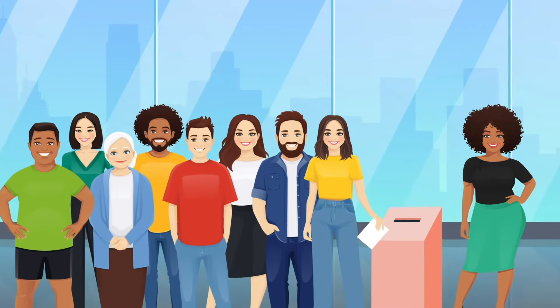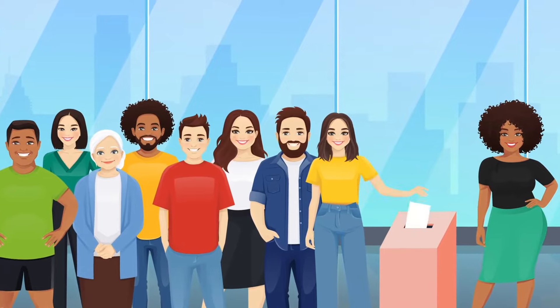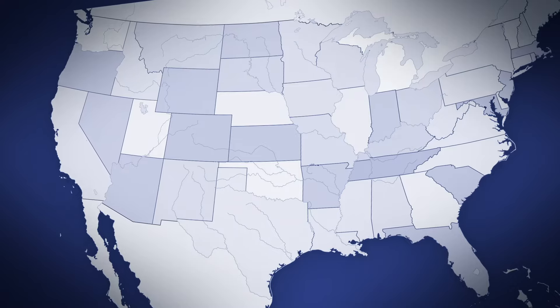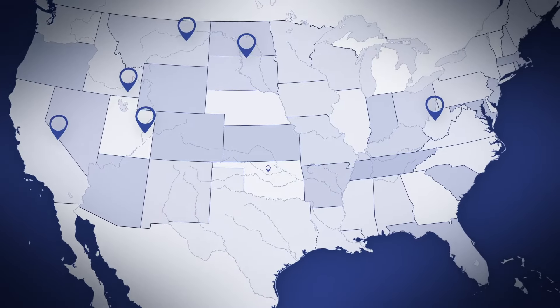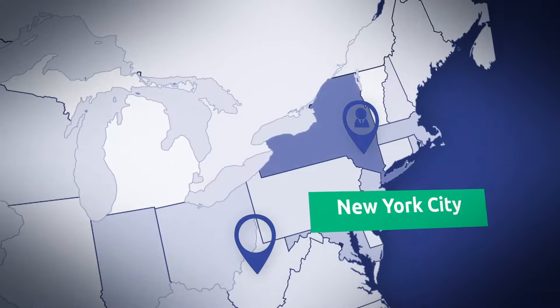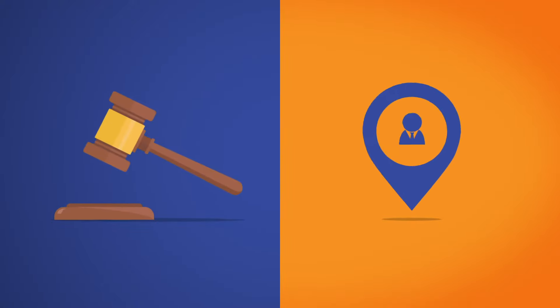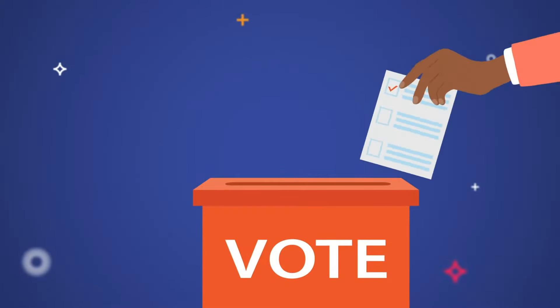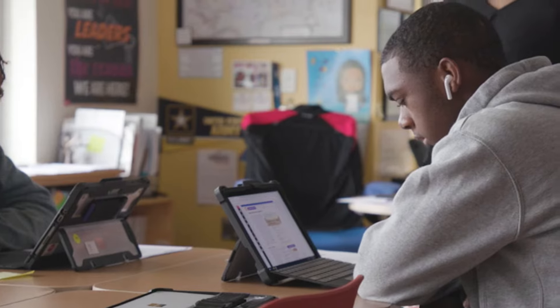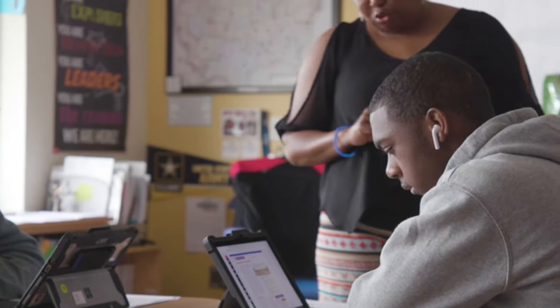In a constitutional democracy, there are elections occurring everywhere all the time. On any given date in America, you could probably find an election taking place somewhere. It could be a statewide election for governor or a city election for mayor. Perhaps judges and local officials are up for office, or even ballot initiatives may be up for a vote. Improving civic education includes teaching students that civic engagement isn't something that happens just once every four years.